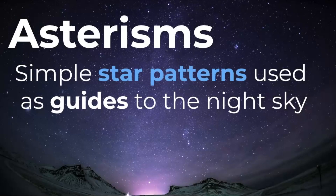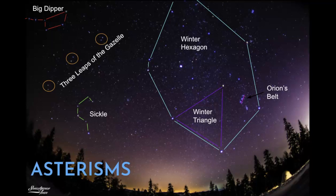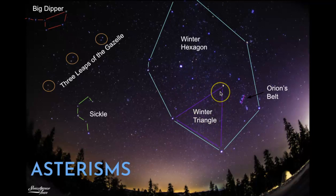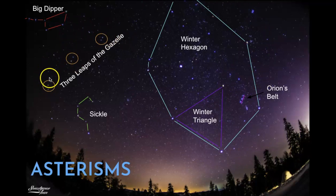First, let's review what asterisms are, because they're not true constellations, but rather a simple star pattern that can be used as guides. They can either be part of a constellation or a collection of constellations. This is an example of asterisms — they can be simple shapes like the Winter Triangle that make up bright stars of three different constellations, or they can be much larger, or even small patterns.